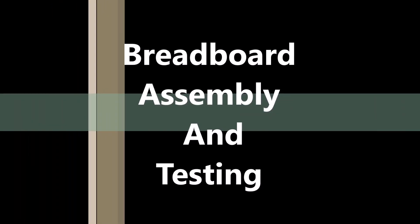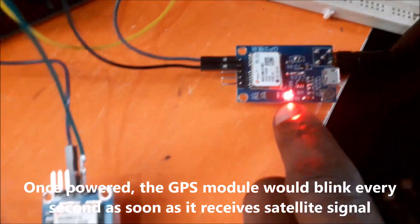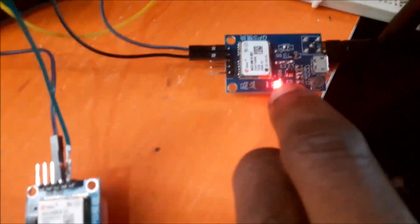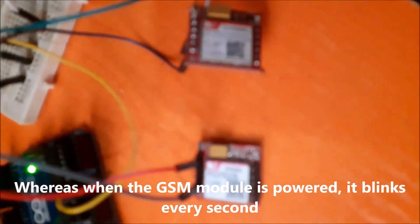Now, assembling this schematic diagram on a breadboard: when power is connected to the GPS module, it blinks every second to show it has satellite signal reception. On the other hand, the GSM module blinks every second when it doesn't have network reception.